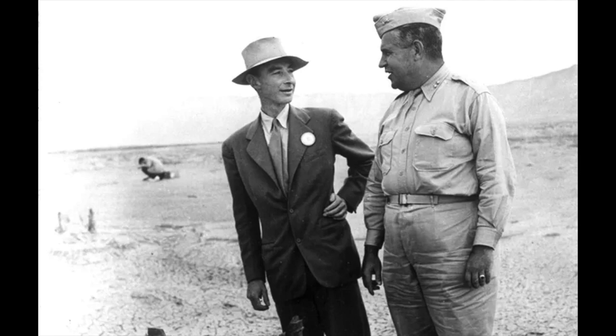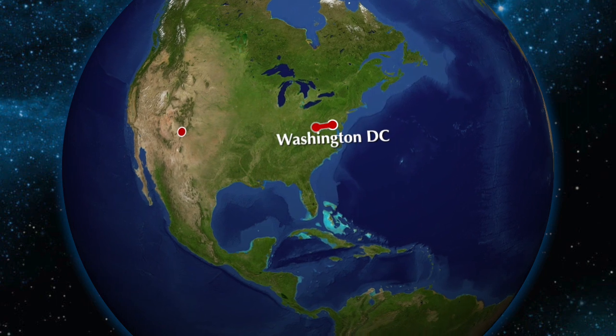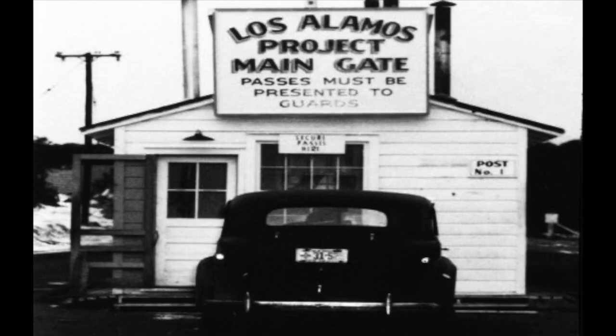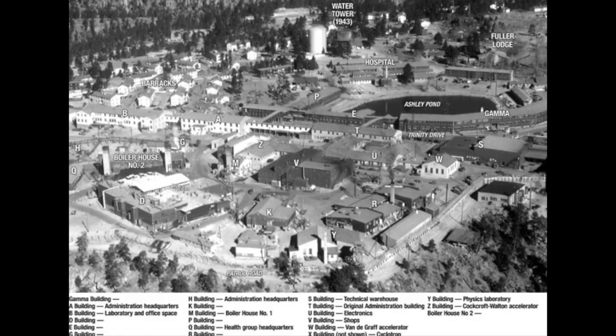The Manhattan Project began in 1939, following the realization that Germany might be working on atomic bomb development. The project brought together an unprecedented number of scientists, engineers, and military personnel in various disciplines. Under the leadership of physicist J. Robert Oppenheimer, the project's main scientific laboratory was established in Los Alamos, New Mexico. Los Alamos became the primary site for research, design, and construction of the atomic bomb.